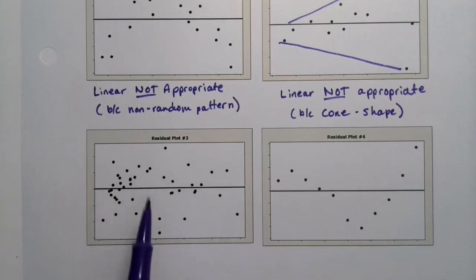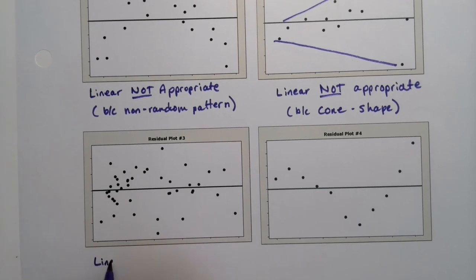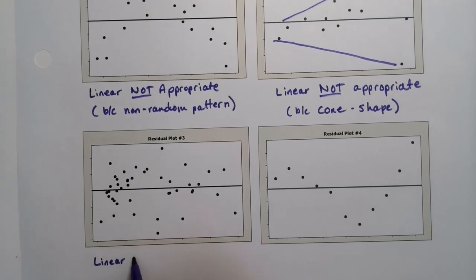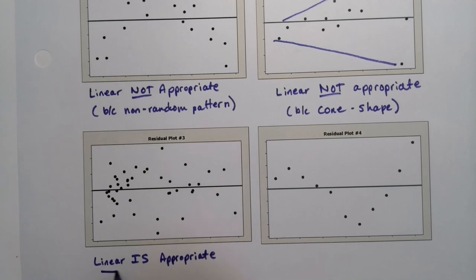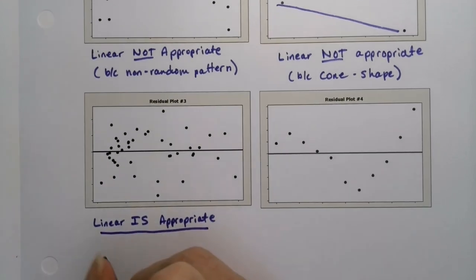It looks like somebody just kind of threw the points up there. So, this is a linear model appropriate. So, you would not throw out your slope and your intercept and all of that good stuff. It has a non-random, or excuse me, because it has a random pattern.